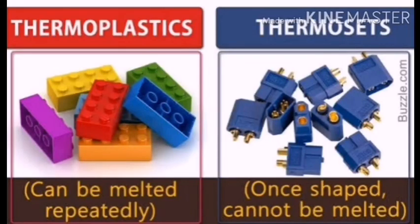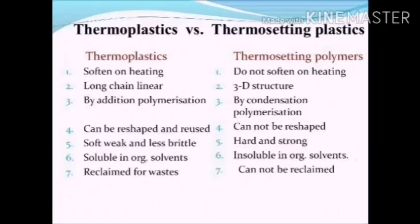In summary: thermoplastic can be melted repeatedly, while thermosetting plastic — once shaped — cannot be melted again. Differences: thermoplastic softens on heating; thermosetting does not. Thermoplastic is long-chain linear; thermosetting is a 3D structure. Thermoplastic is formed by addition polymerization; thermosetting by condensation polymerization. Thermoplastic can be reshaped and reused; thermosetting cannot. Thermoplastic is soft, weak and lusterless; thermosetting is hard and strong. Thermoplastic is soluble in organic solvents; thermosetting is insoluble. Thermoplastic can be reclaimed from waste; thermosetting cannot.